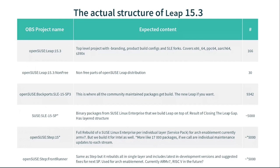The last project is under the OpenSUSE STEP namespace — it's the front runner where we rebuild everything in a single layer, not in individual service packs. This is where we are actually developing ARMv7, and we have the option to include development versions or suggested fixes for the next service packs. There's a little flexibility to take some changes ahead, since the bootstrap and rebuild takes quite a lot of time. We may also use this for RISC-V enablement in the future. This is roughly the structure — skipping images and containers — but let's talk about package submissions, which is probably where you would contribute.